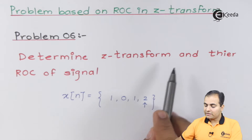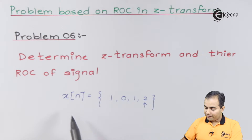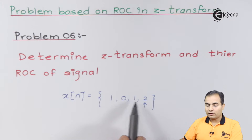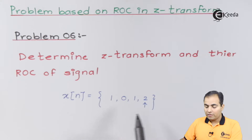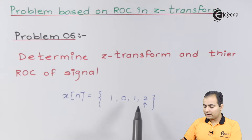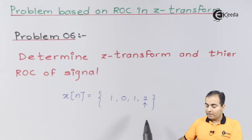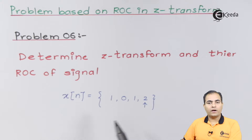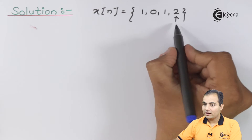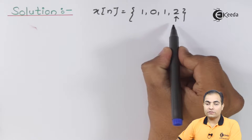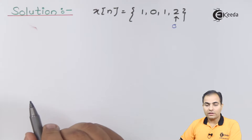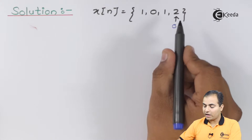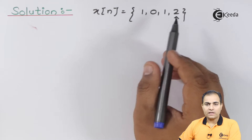Problem number six: determine the Z-transform and ROC of the signal where x[n] is given as {1, 0, 1, 2}. The arrow is marked on the rightmost element, which means the origin value is at x[0] = 2. All the samples are available on the left-hand side, meaning all instances are at negative indices.